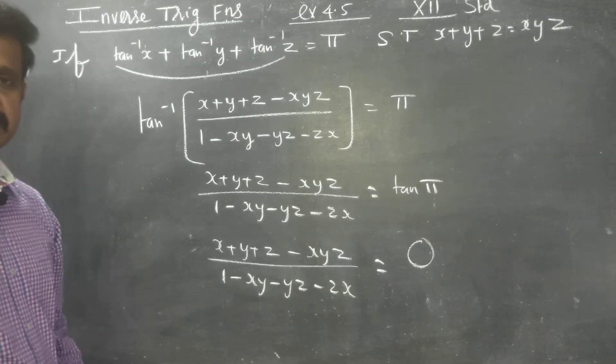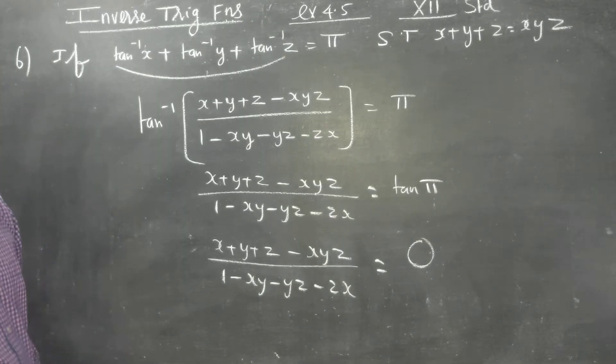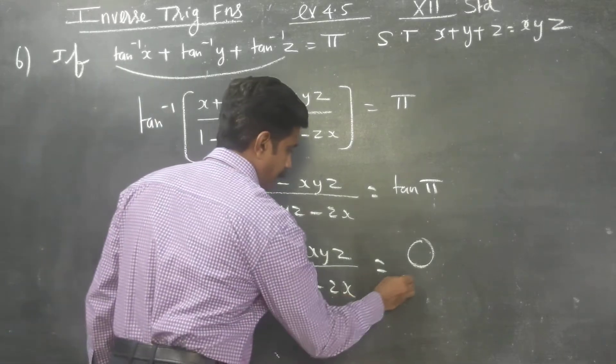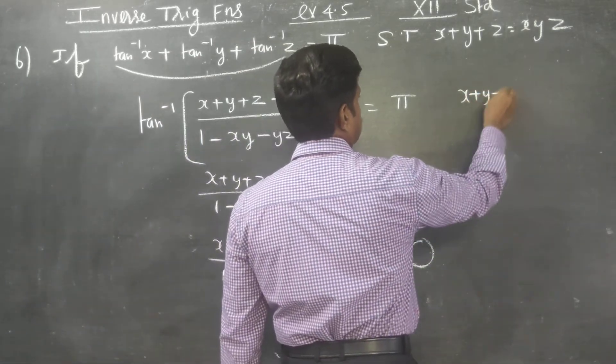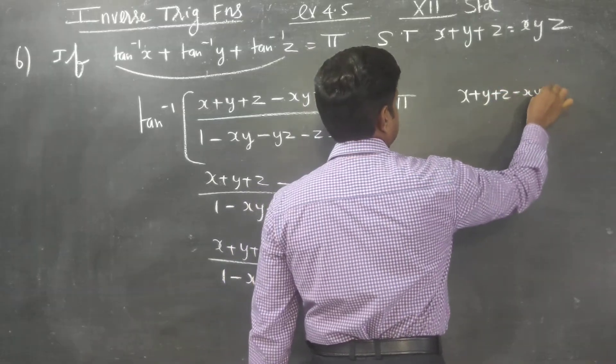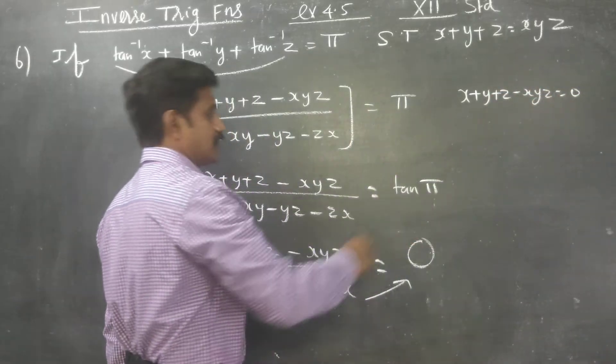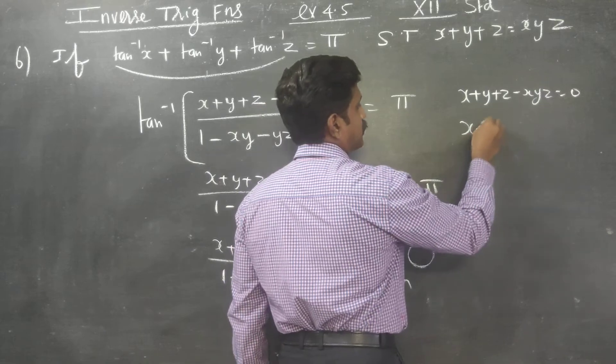Tan pi is 0. You have to cross multiply. So x plus y plus z minus xyz is equal to 0, since anything multiplied by 0 is equal to 0.